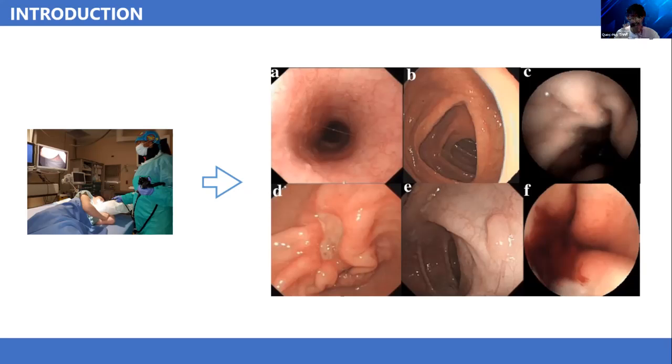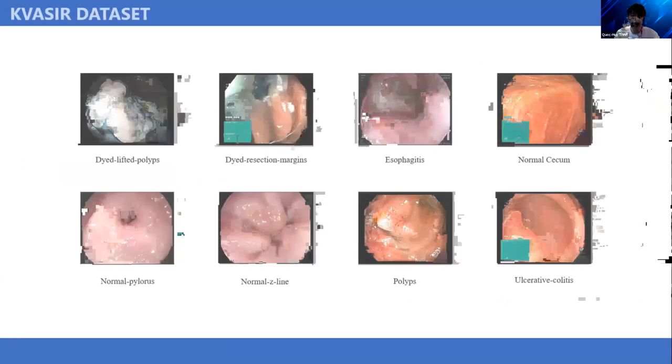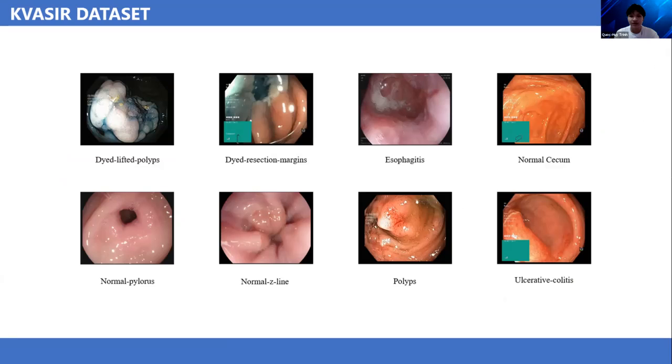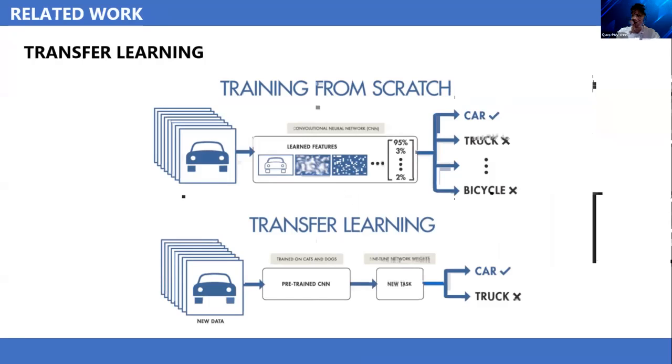Let's talk about the Kervasi dataset. Kervasi dataset is an open dataset with 8,000 images across eight labels: dyed lifted polyps, dyed resection margins, esophagitis, normal cecum, normal pylorus, normal Z-line, polyps, and ulcerative colitis.